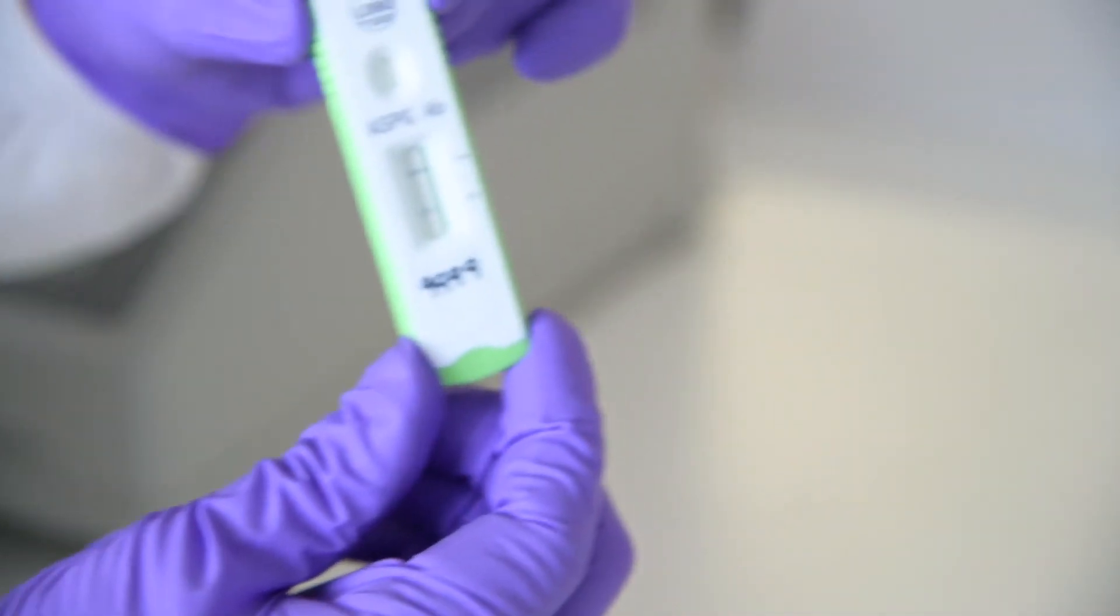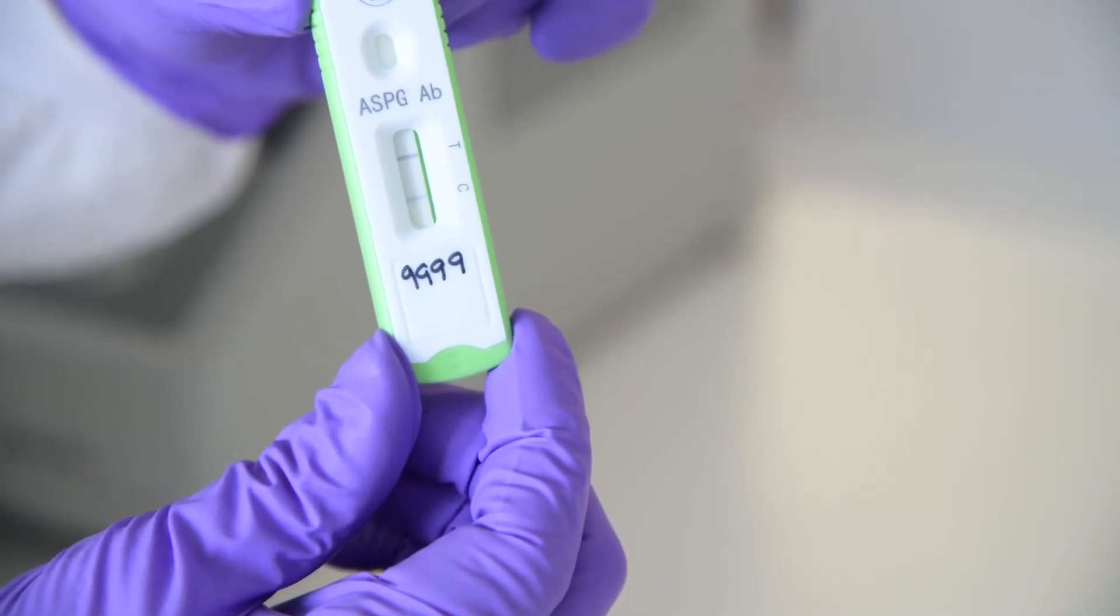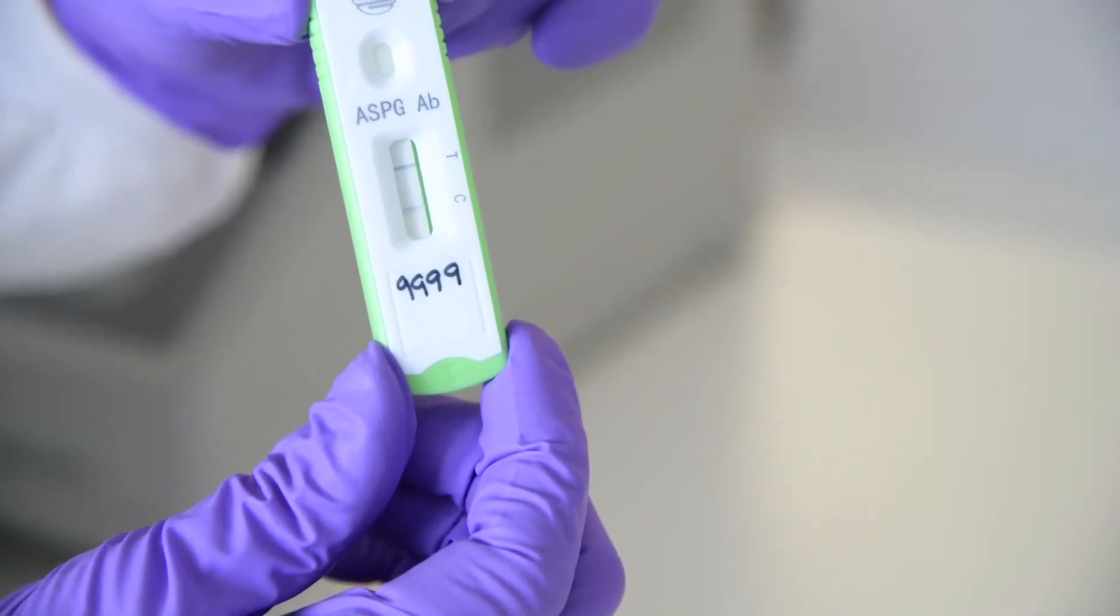If specific antibodies, IgG and/or IgM, are present in the sample, a complex is formed between the T latex and the patient's antibodies, which is then captured by the T band. It results in the appearance of a black line showing the test result to be positive.